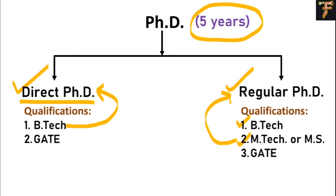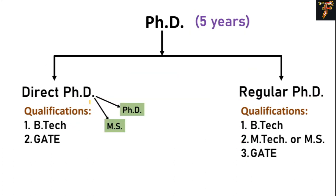The second difference is coursework. For regular PhD, IIT Madras generally requires four to five courses. For direct PhD, you have to finish six to eight courses during the first year. After that, direct PhD and regular PhD students are equal. One good thing about direct PhD is that you will get two degrees at the end: one MS and one PhD. If after two or two and a half years you are not interested in continuing, you can terminate and at that point you will be eligible for the MS degree. So direct PhD is a better option if you are a B.Tech student.